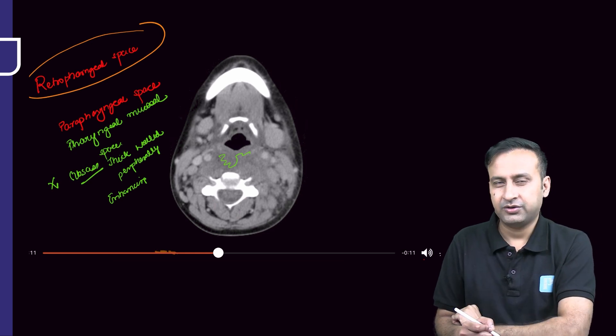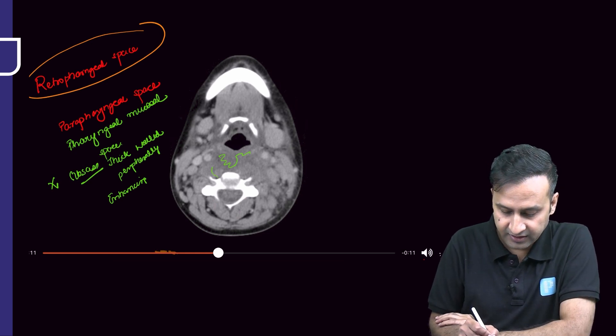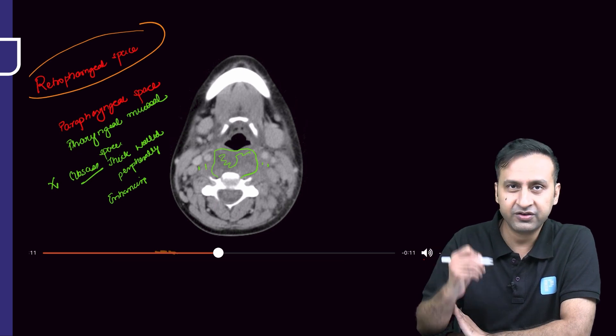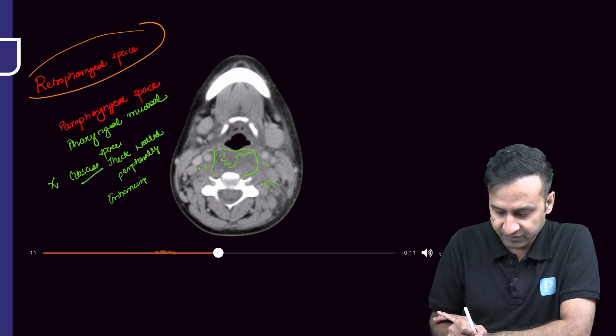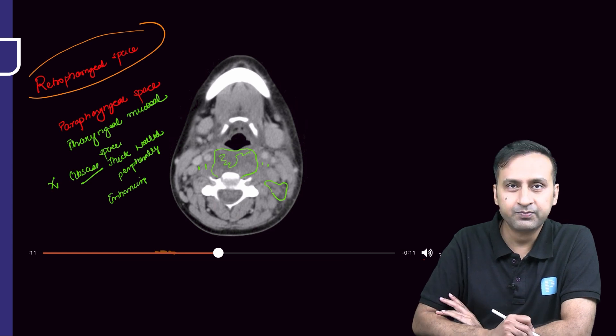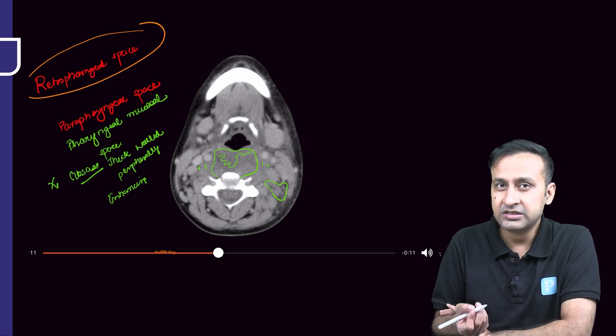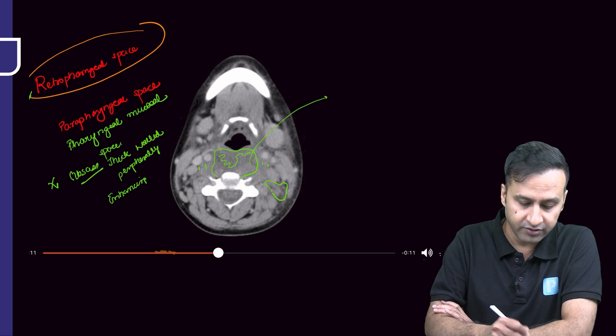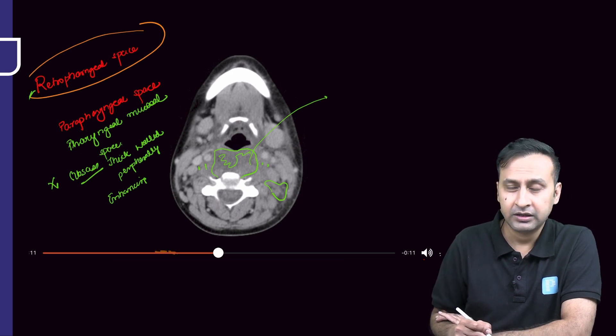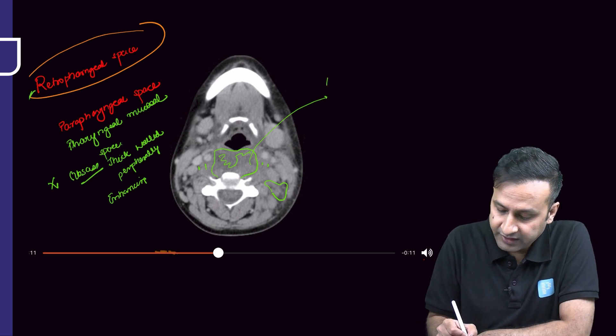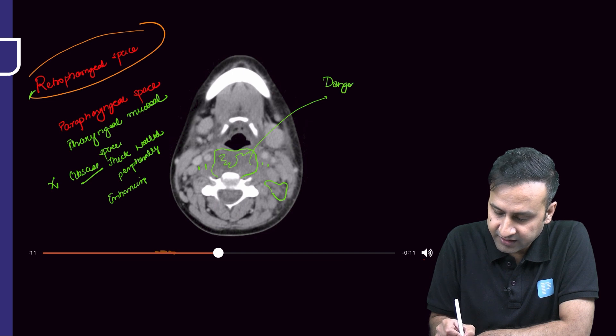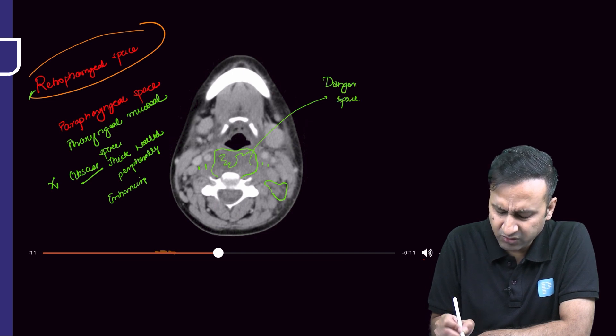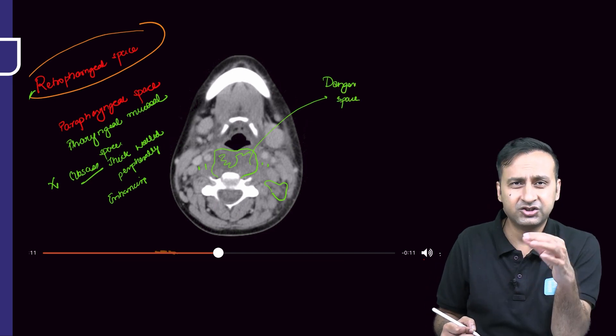A very important question you can ask here: it is lying in the midline here. I can see that the carotid space has been entirely displaced. I can see some inflammatory stranding in this important space. What are the other spaces that are potentially involved here?